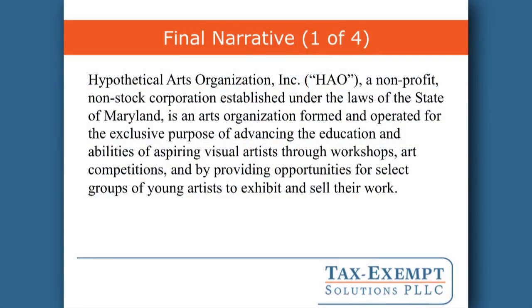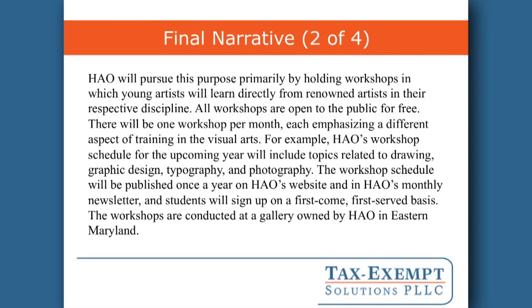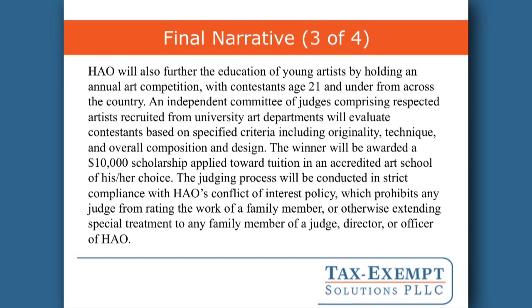So those are steps one through five. Let's look at what the final product might look like. Feel free to pause the webinar if you want to read these paragraphs more slowly or take notes. Paragraph two talks about the workshops — we're emphasizing that the workshops are open to the public for free, with some details about the topics the workshops will cover, how people can sign up, and noting that the workshops are conducted at a gallery owned by HAO. The third paragraph talks about the arts competition — noting it's for young artists under the age of 21, with an independent committee of judges using criteria of originality, technique, overall composition, and design — these are aesthetic criteria. We'll note that the prize money is used for tuition at an accredited art school, furthering the organization's education purpose.